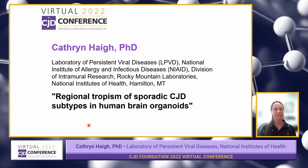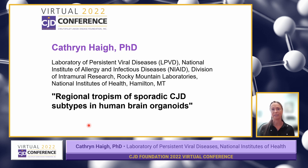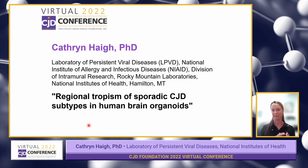Our grant was called Regional Tropism of Sporadic CJD Subtypes in Human Brain Organoids. What we really want to look at is that during sporadic CJD, patients present with different symptoms and also different disease durations. These are often caused by different subtypes, which we think are very small changes in the structure of the prions, the agent that causes disease.